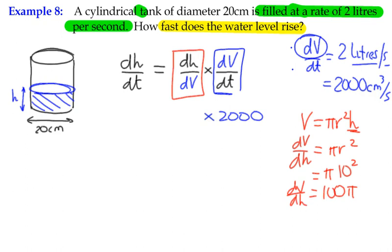We're looking for dH/dV. So we're having to use one over 100π. So we can say dH/dt is one over 100π. So that's dH/dV, the inverse of it, times 2000.